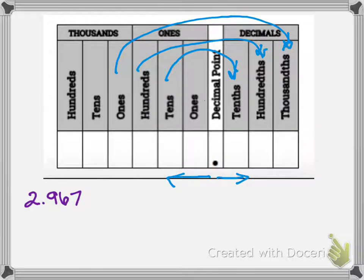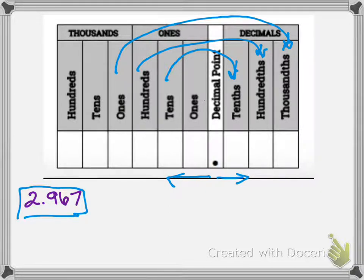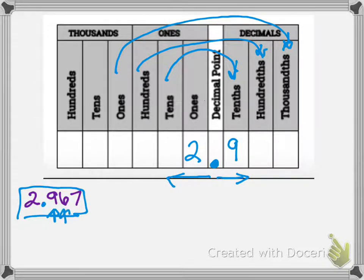We're going to write this number here in word form, so we have to be able to say the word. You can place it on the decimal chart. We see our decimal is right here, and that can be our base. So we're going to put the two in the ones place, the nine goes in the tenths place, the six goes in the hundredths place, and the seven goes in the thousandths place.